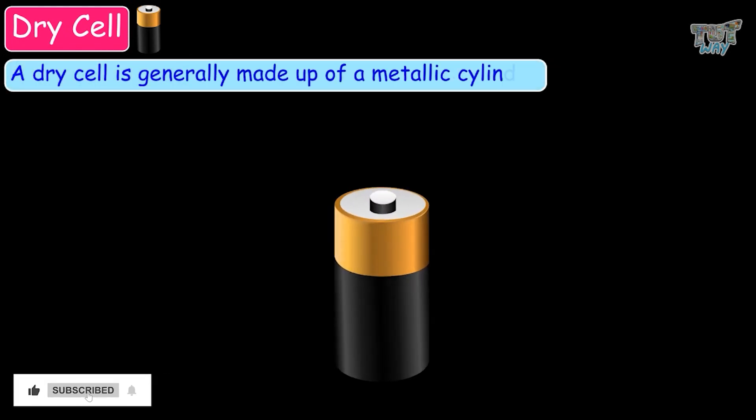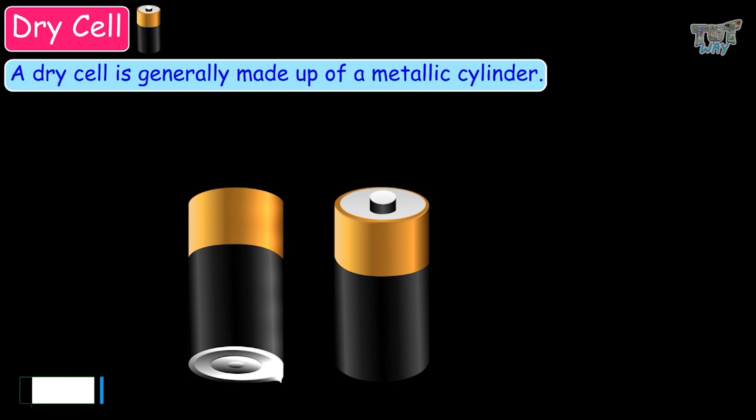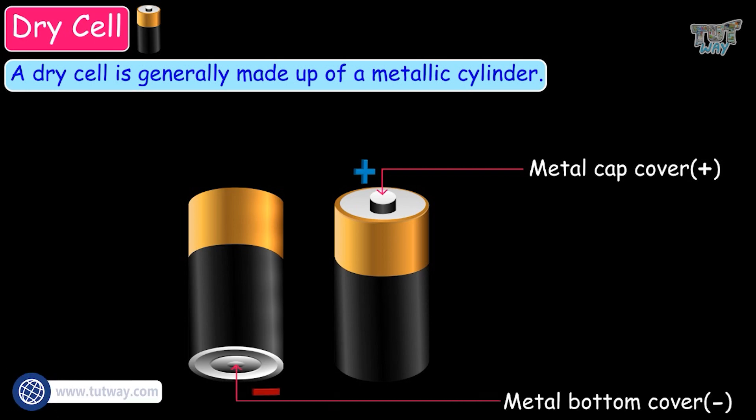A dry cell is generally made up of a metallic cylinder. It has a metallic cap on top and a flat base on the bottom. The metallic cap on the top is the positive terminal of the cell. The flat base is the negative terminal of the cell.